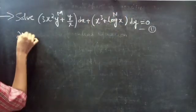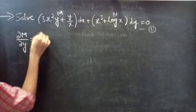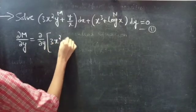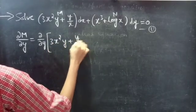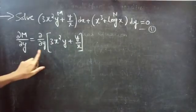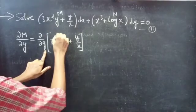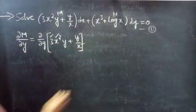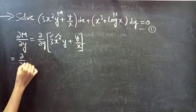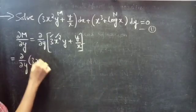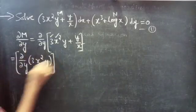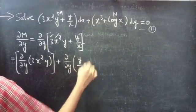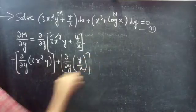If the partial derivative of M with respect to y equals the partial derivative of N with respect to x, then we can say the given differential equation is an exact equation. So, let's find the partial derivative of M with respect to y. This equals ∂/∂y of (3x² y + y/x). Here we are doing the partial derivative with respect to y, so we will treat x as a constant. This equals ∂/∂y of the first term 3x² y plus ∂/∂y of the second term.